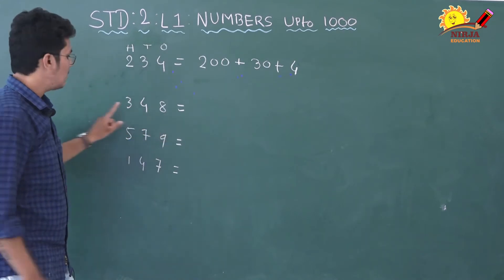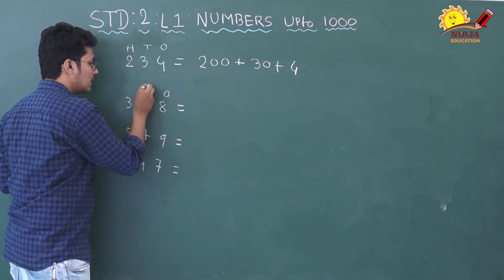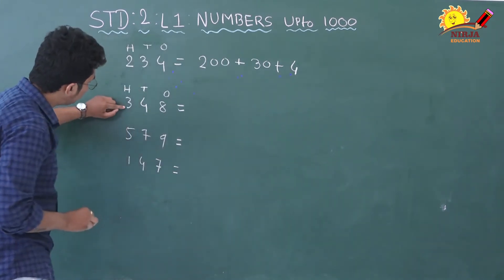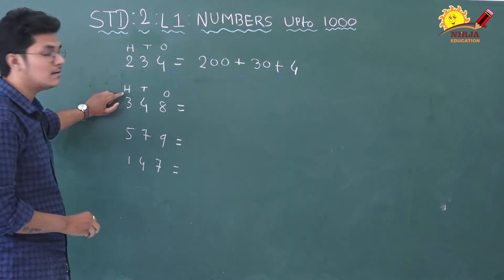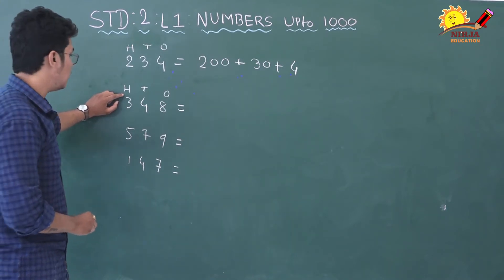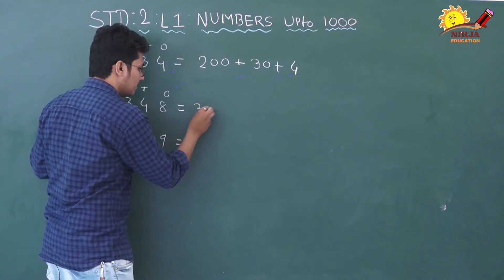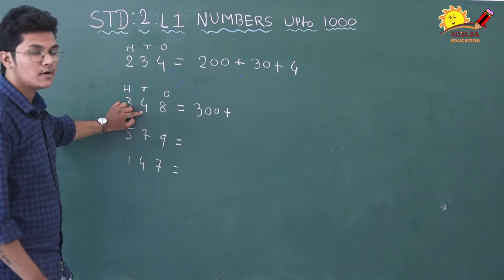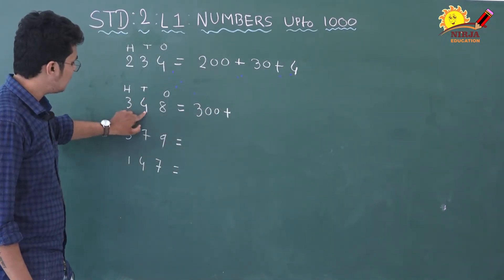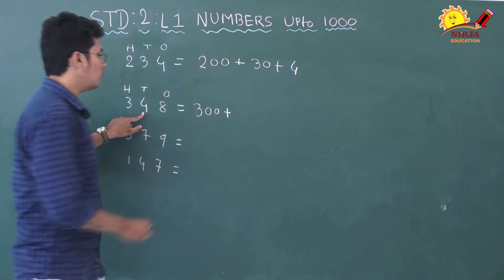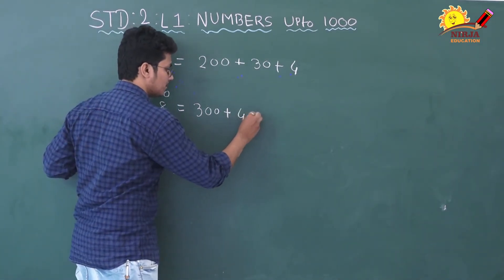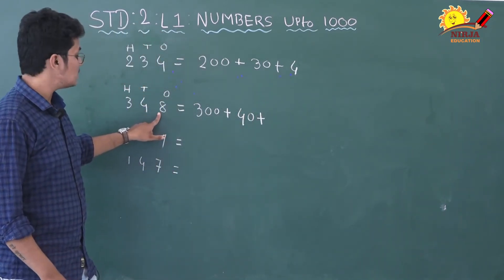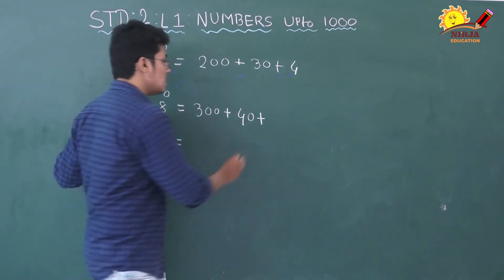348: 8, ones ke place peh hai. 4, tens ke place peh hai. So, 3 ki place value hoi? 300. Kyunki woh hundreds ke place peh hai. So, 300. Plus, 4 tens ke place peh hai. So, 4 ki place value hoi? 40. And 8, ones ke place peh hai. So, 8 ki place value hoi? 8.